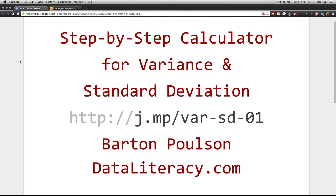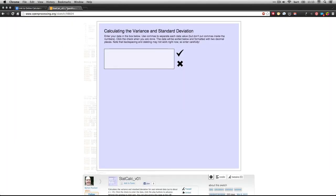Just go to this web address j.mp/var-sd-01. When you go there, it's going to take you to a website called Open Processing.